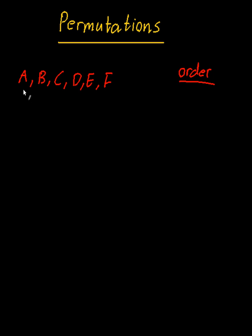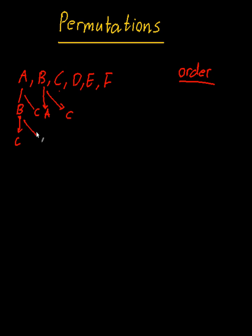If you want to figure out why: if I choose A to start off with, the second letter can be B, C, D, E, or F. If I chose B, my second letter can be A, C, D, E, or F, and so on. Then the third letter can be C, D, E, or F. This tree can go on, but basically if you count the number of branches, you find that it's going to be six factorial.